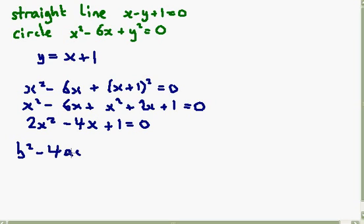If it is equal to 0, if the discriminant is 0, then that means there is only one solution, which means the straight line is a tangent to the circle. So it only crosses, only touches the circle once. On the other hand, if the discriminant is greater than 0, then there are two distinct intersections.